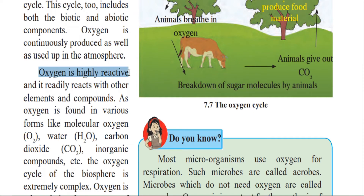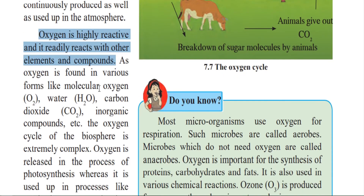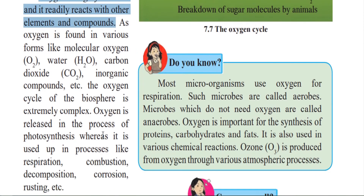Oxygen is highly reactive and it readily reacts with other elements and compounds. Oxygen is found in various forms: molecular oxygen — that is, oxygen gas in the atmosphere — water (H₂O), carbon dioxide (CO₂), and various inorganic compounds. So it is present in all these forms.